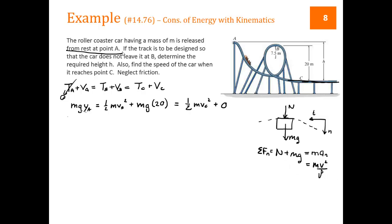We want the limiting case where it's just about to leave the track, that would be N equal to zero. So if N is equal to zero, then we have MG equals M of V squared over rho. So VB is equal to the square root, M's cancel, of rho G, which gives us 8.58 meters per second.